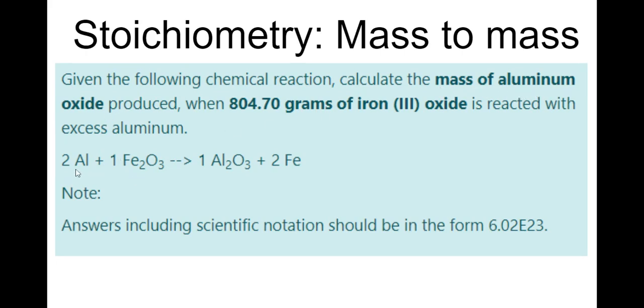Also take note of this reaction because it's going to come back, and this is why we practice naming and balancing. We're 2Al + 1Fe2O3 iron(III) oxide reacts to form 1Al2O3 and 2Fe. This note is always on there, but good to know.